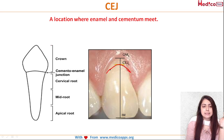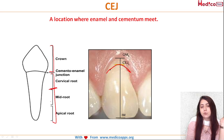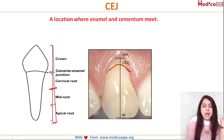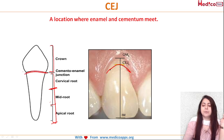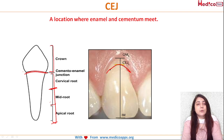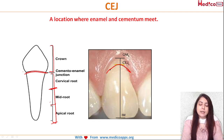This is the clinical crown, this is the root, and in the root they have subdivided it into cervical, middle, and apical one third. This is the cemento-enamel junction. Now the cemento-enamel junction is not always end to end, where enamel ends and cementum also ends at the same point.